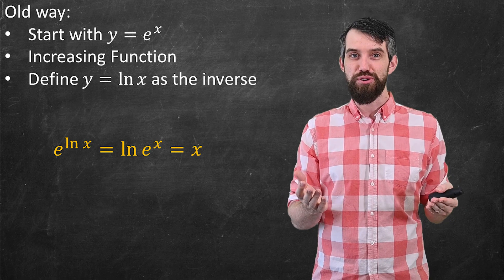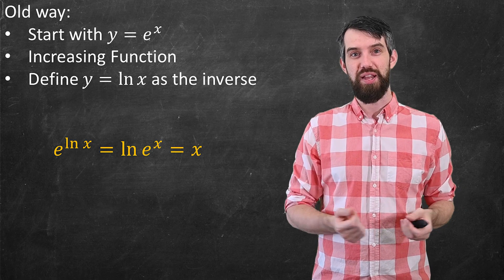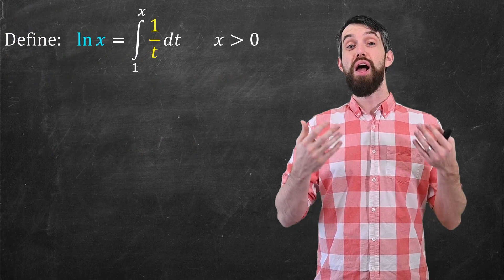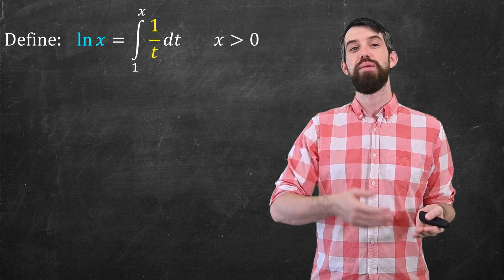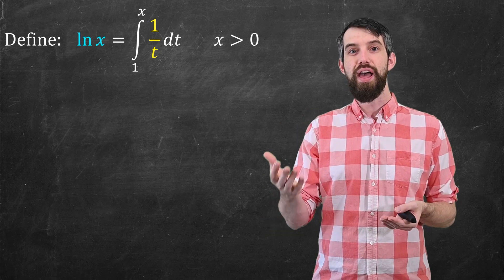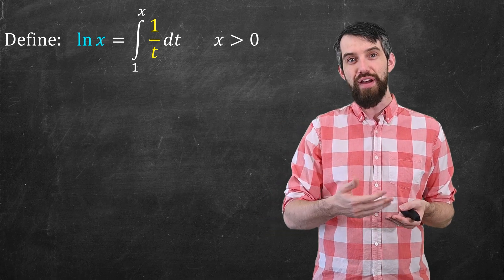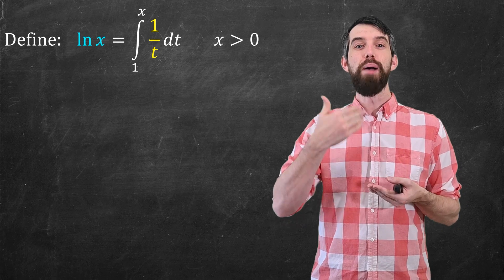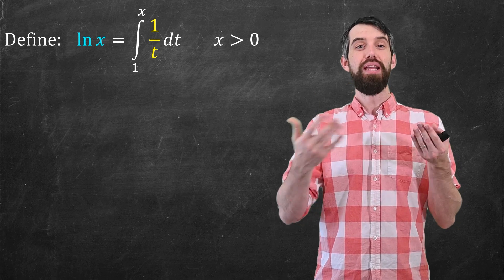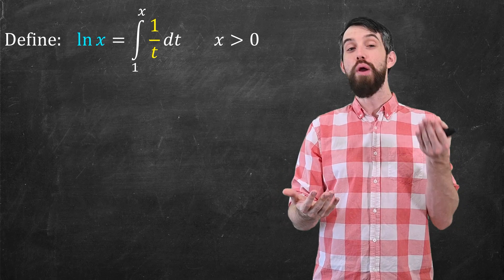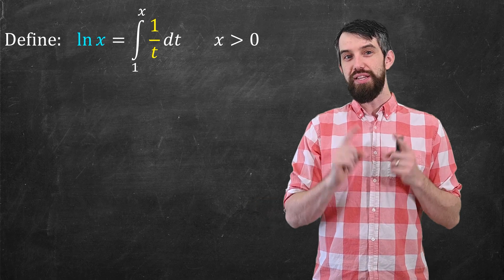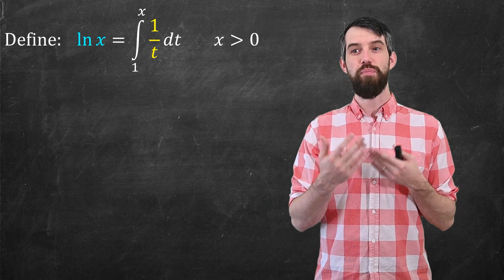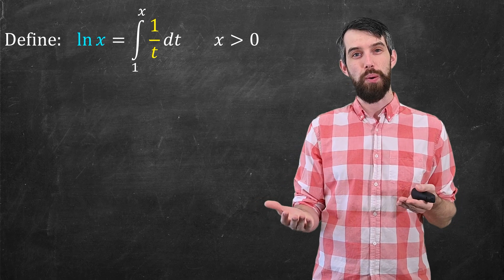Now I'm going to introduce a new way of thinking about it. Here's my definition. I'm going to define the logarithm of x — sometimes pronounced ln of x — as the integral from 1 up to x of 1 over t dt. This is a definition that applies for values of x greater than 0.